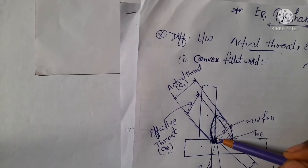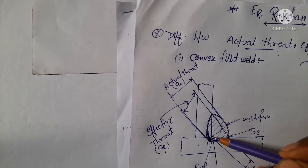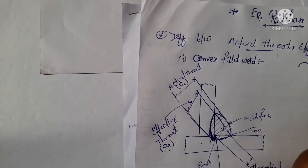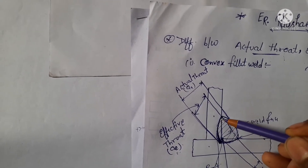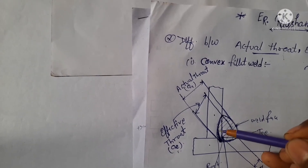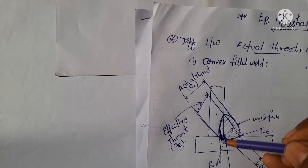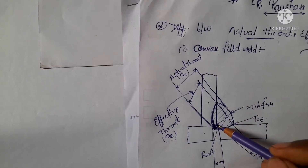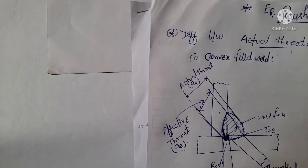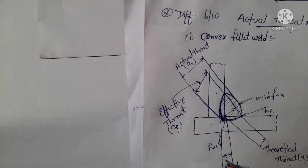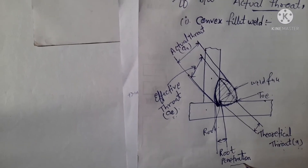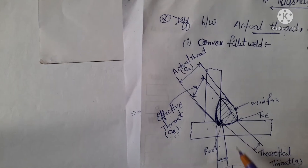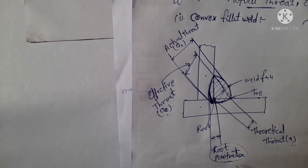This distance is the weld size. This distance between the root to this welding is the root penetration. This distance is known as root penetration.